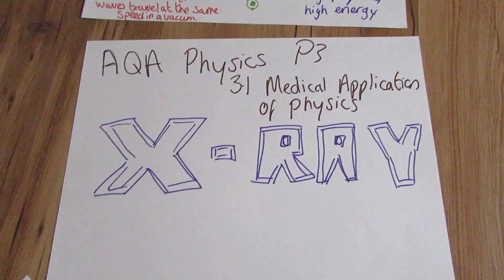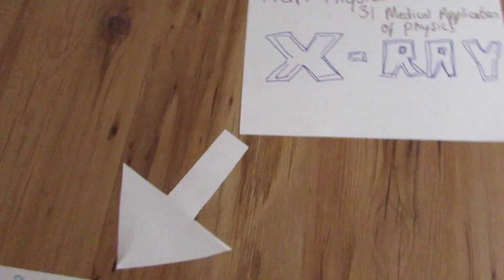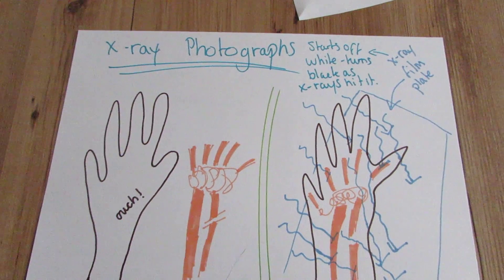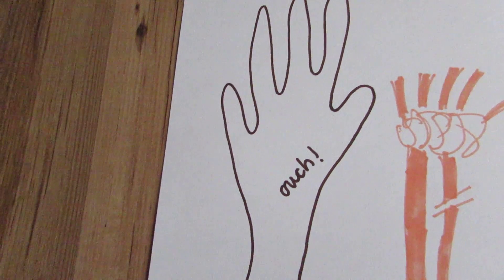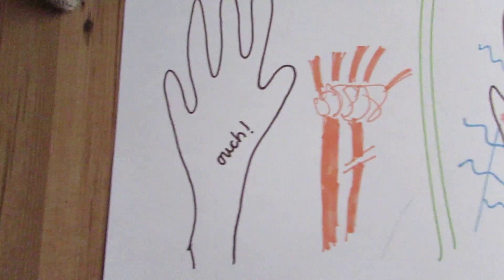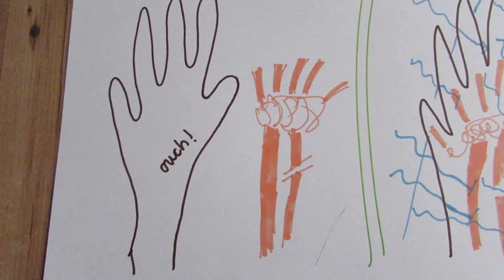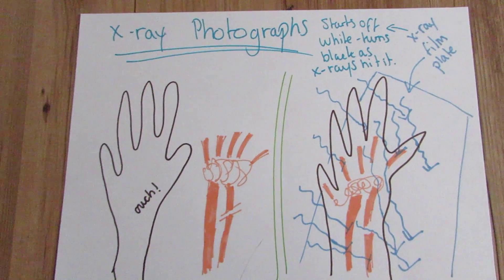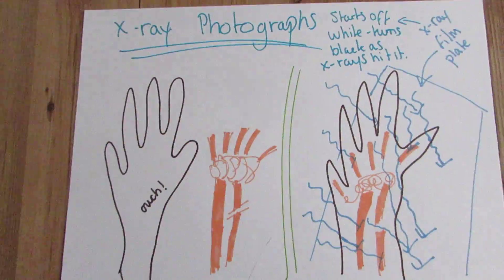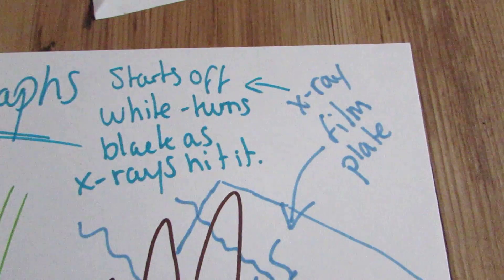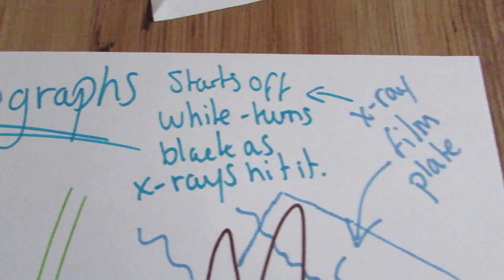Now x-rays can be used for two different things. The first one they can be used for is taking x-ray photographs. Some of you may have had these taken before. If you hurt yourself, you may have had an x-ray taken to see whether you've broken your bones or not. The way it works is you have the x-rays fired at your hand, your arm, your foot, whatever you've hurt. And traditionally, there was an x-ray film plate behind that.